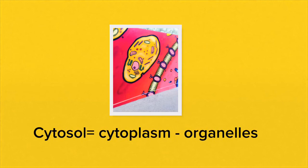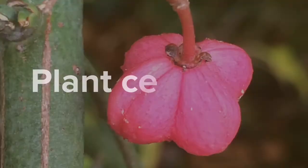Eukaryotic cells are mostly made up of a liquid known as cytoplasm. When you remove the organelles from the cytoplasm, it becomes known as cytosol. A phrase you need to know is protoplasm, which simply means the living content of the cell.